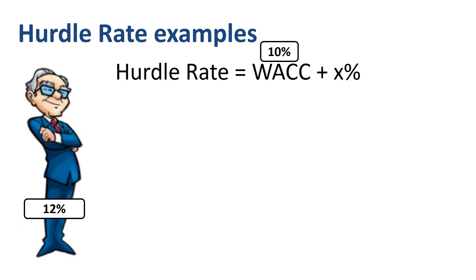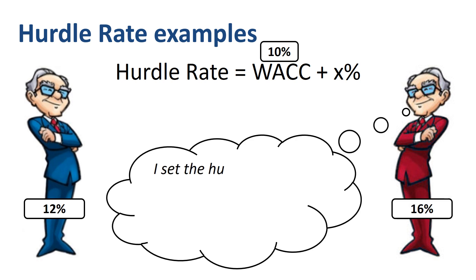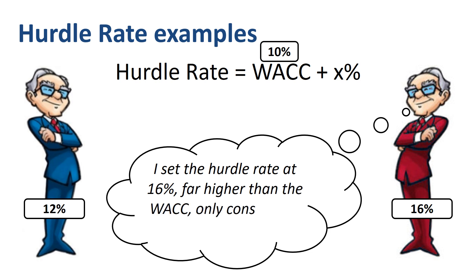The CFO in red, on the right, takes a different approach. He sets the hurdle rate at 16% — a WACC of 10% plus 6 percentage points. This hurdle rate is far higher than the WACC. The reason is that the CFO in red only wants to consider the very best projects with IRRs that significantly exceed the WACC. He raised the bar significantly.